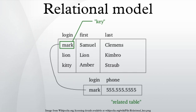Attributes is the term used in the theory for what is commonly referred to as a column. Similarly, table is commonly used in place of the theoretical term relation. A table data structure is specified as a list of column definitions, each of which specifies a unique column name and the type of the values that are permitted for that column. An attribute value is the entry in a specific column and row, such as John Doe, or 35.